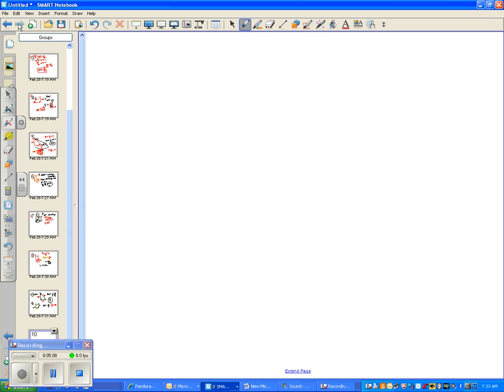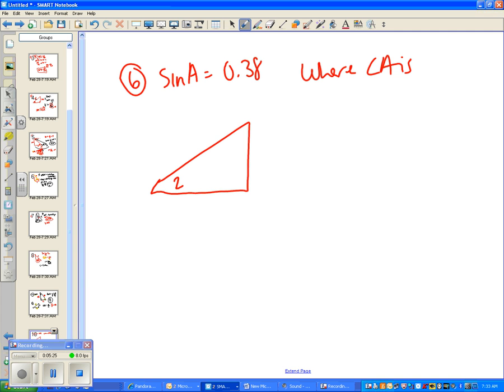Number 6, use the trig ratio sine A equals 0.38 to figure out where angle A is. So we have this triangle that looked like this, they called this angle 2, this angle 3, which was 90 degrees so it's not going to be an answer, and angle 1. They told you this is 1.3, and this is 0.5, and this is 1.2.